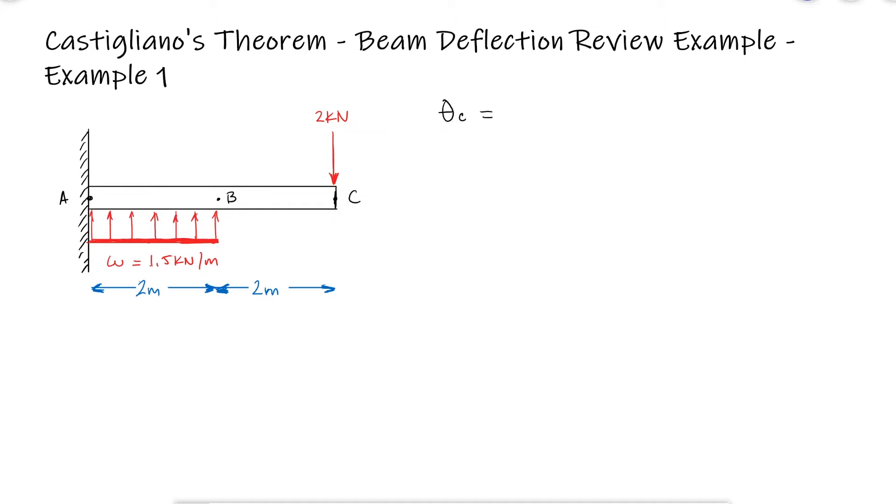The transformed section elastic modulus and second moment of area I were calculated and used to determine the angle of deflection at C. We did it using singularity functions.